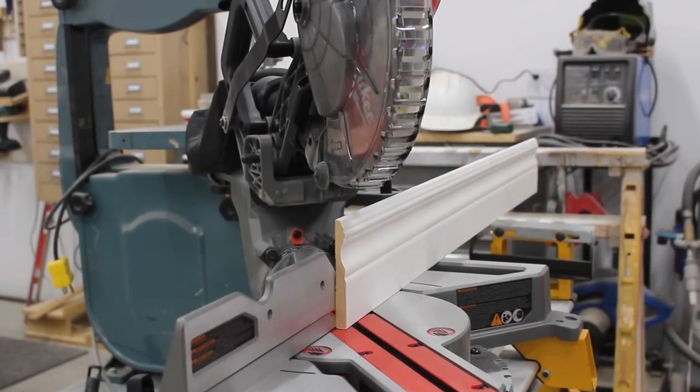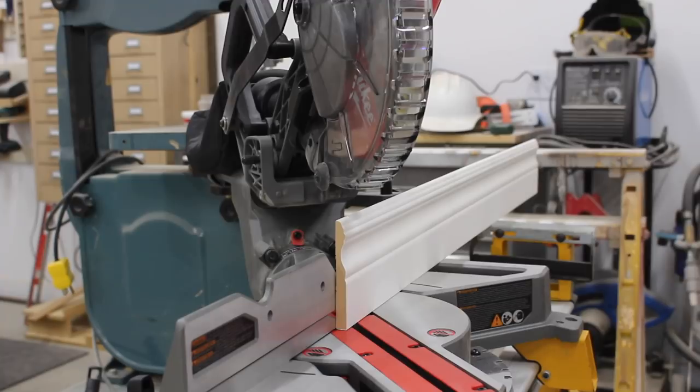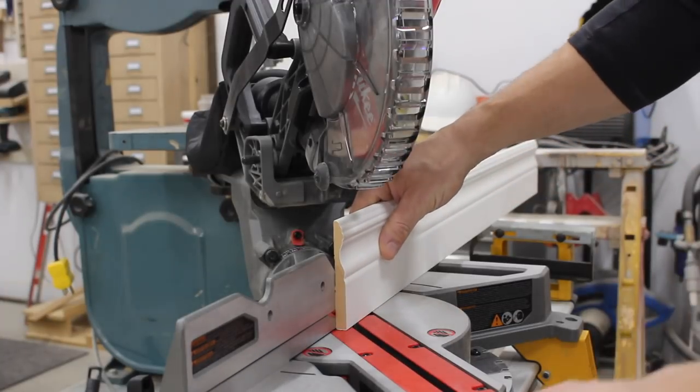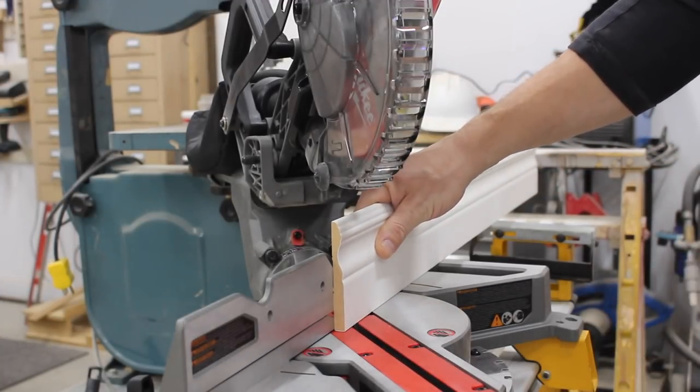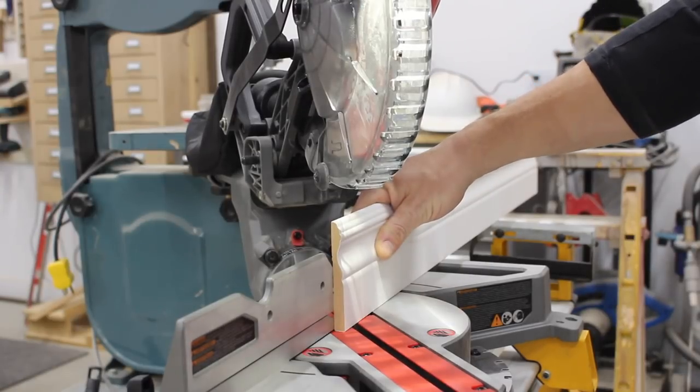To make our return, what you need to do is make a 45-degree outside corner cut like you normally would for an outside corner. So let's just get started.